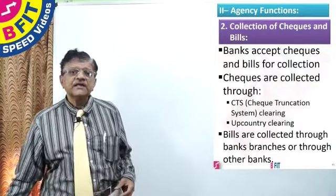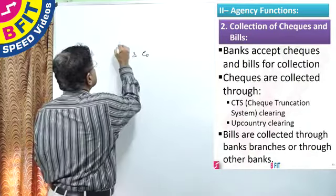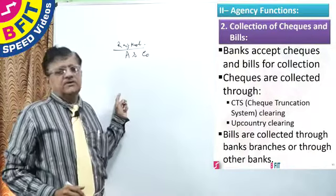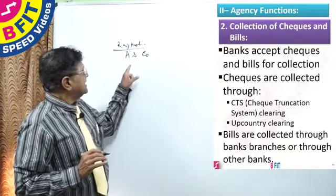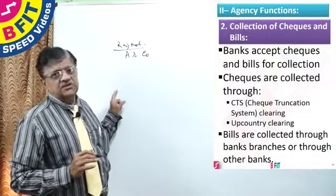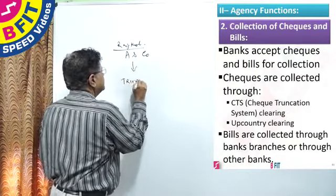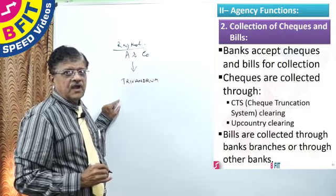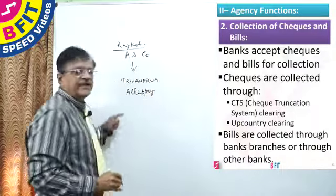Let us take one typical example. There is one manufacturer, A and Company, in Rajkot, Gujarat. Every day they are making 1 to 2 lakh watches and sending them all over India. They are sending to Trivandrum and Alappuzha in Kerala. Let us take only these two examples.